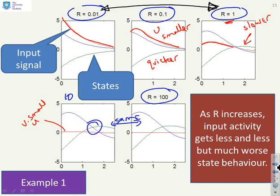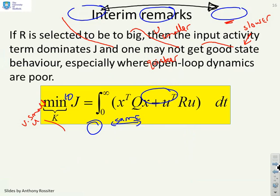The key thing is, as R increases, the input activity gets less and less, but you get worse state behavior. So you have to decide what compromise you want.